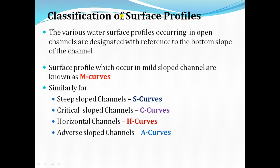Coming to the classification of surface profiles: the various water surface profiles occurring in open channels are designated with reference to the bottom slopes of the channel. Surface profiles occurring in mild slope channels are called M curves; in steep slope channels, S curves; in critical slope channels, C curves; in horizontal channels, H curves; and in adverse slope channels, A curves.